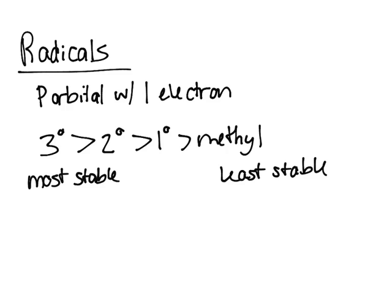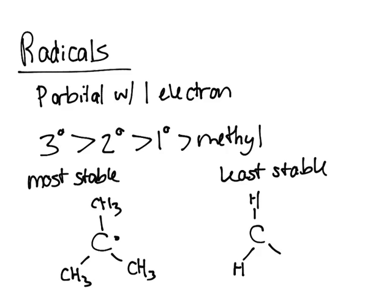What do I mean by that? Tertiary, you have C-CH3-CH3-CH3 with a radical. That would be a tertiary radical, while a methyl would be H's with a radical. So tertiary is the most stable, while a methyl is the least stable.